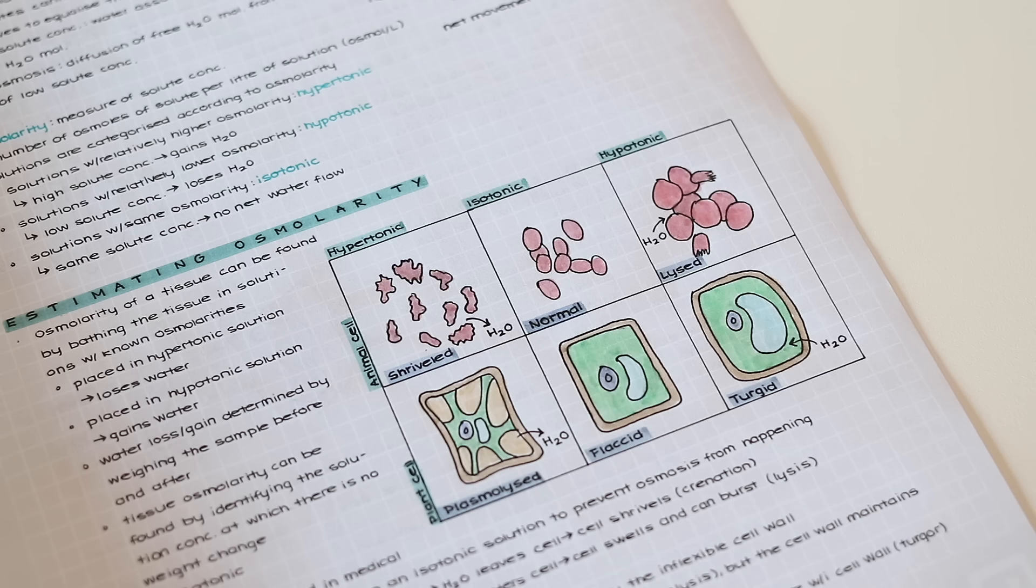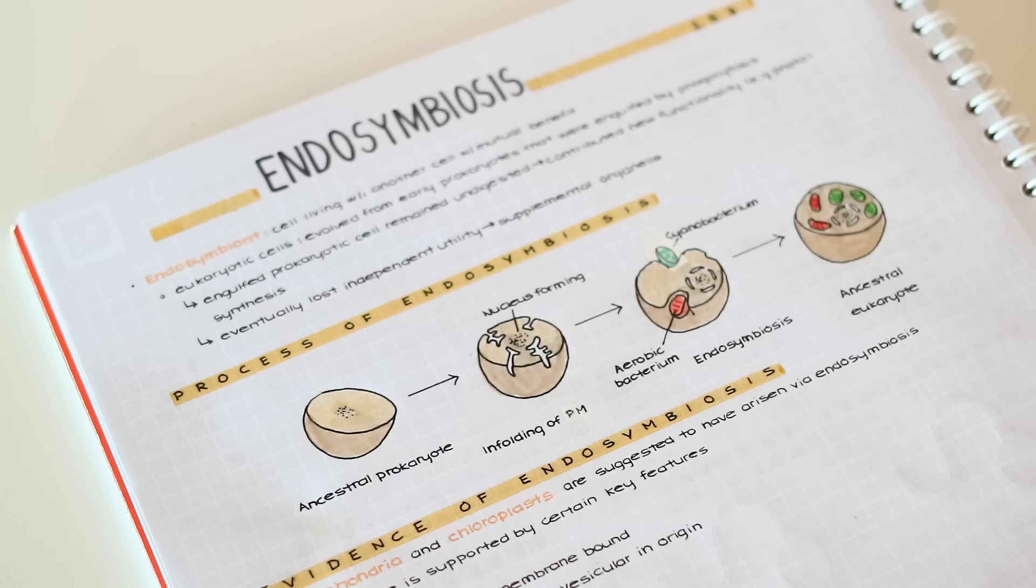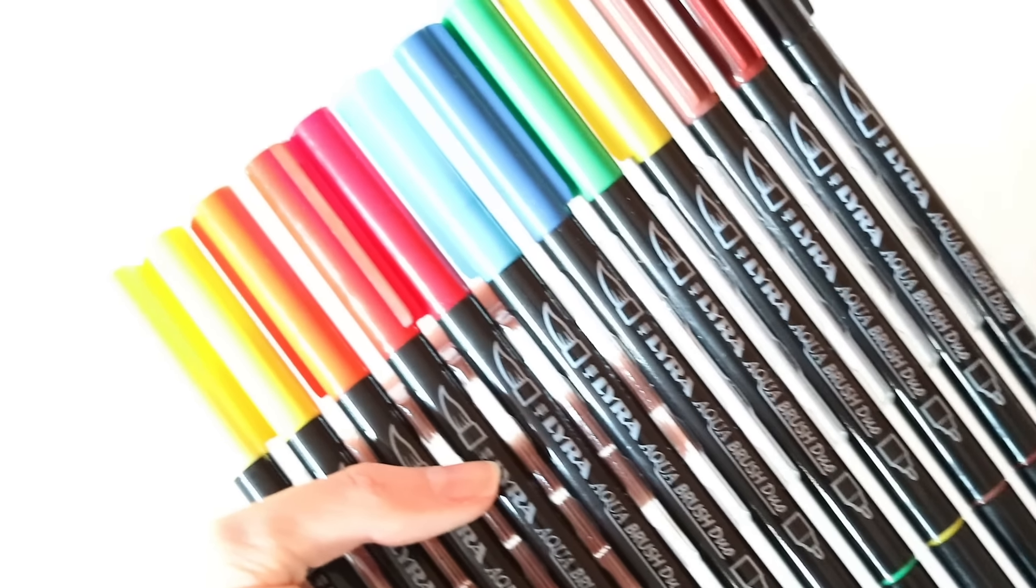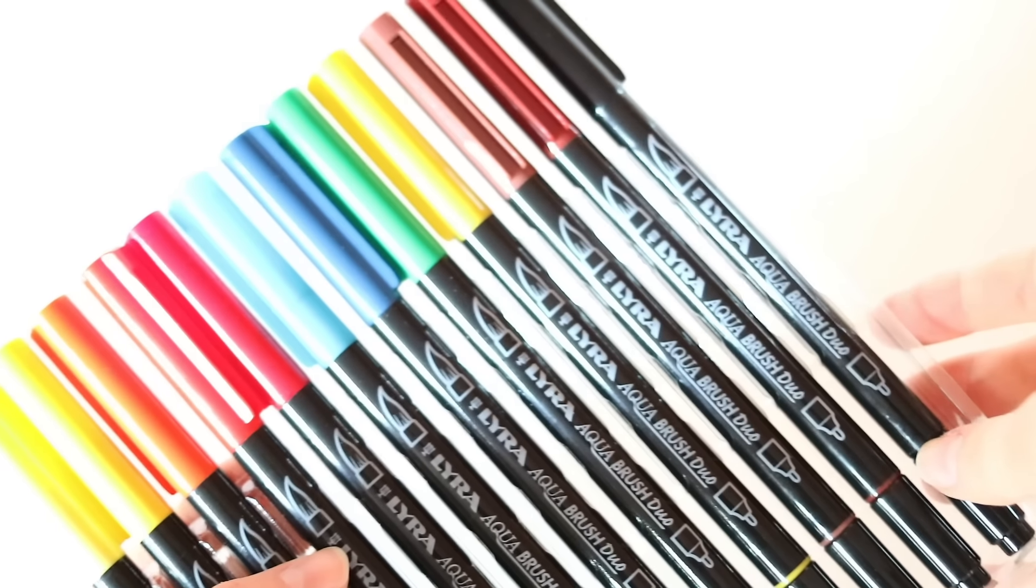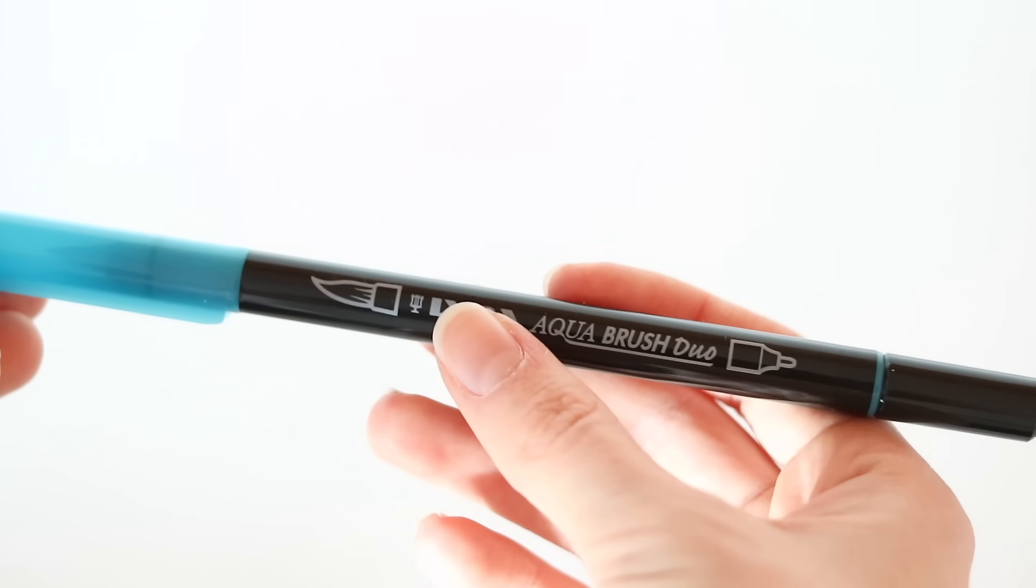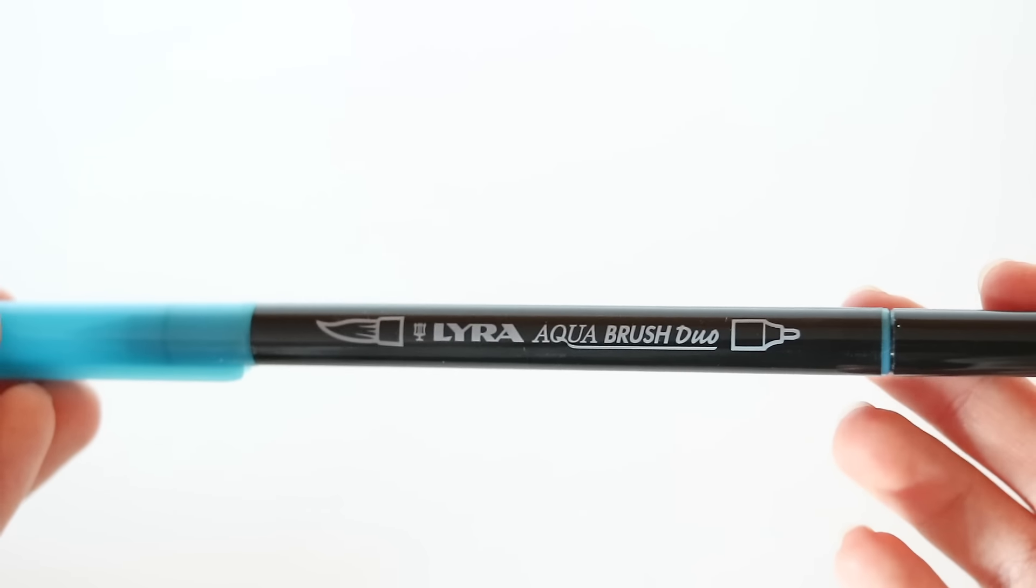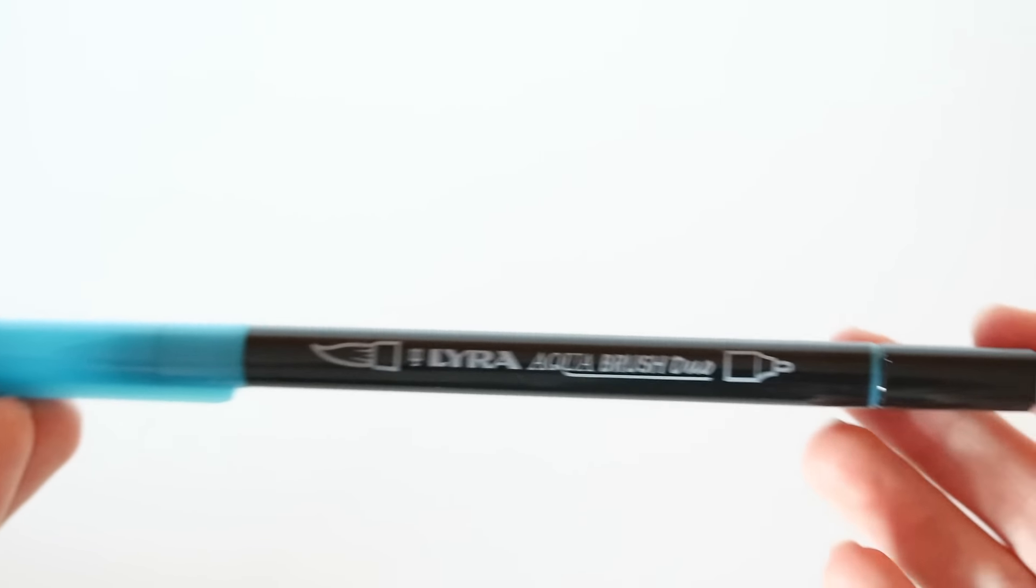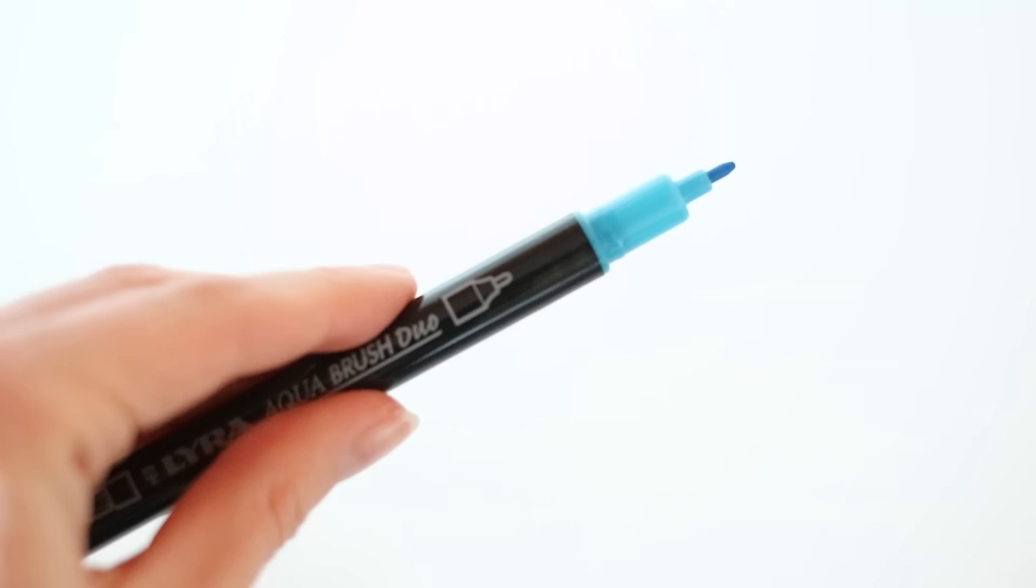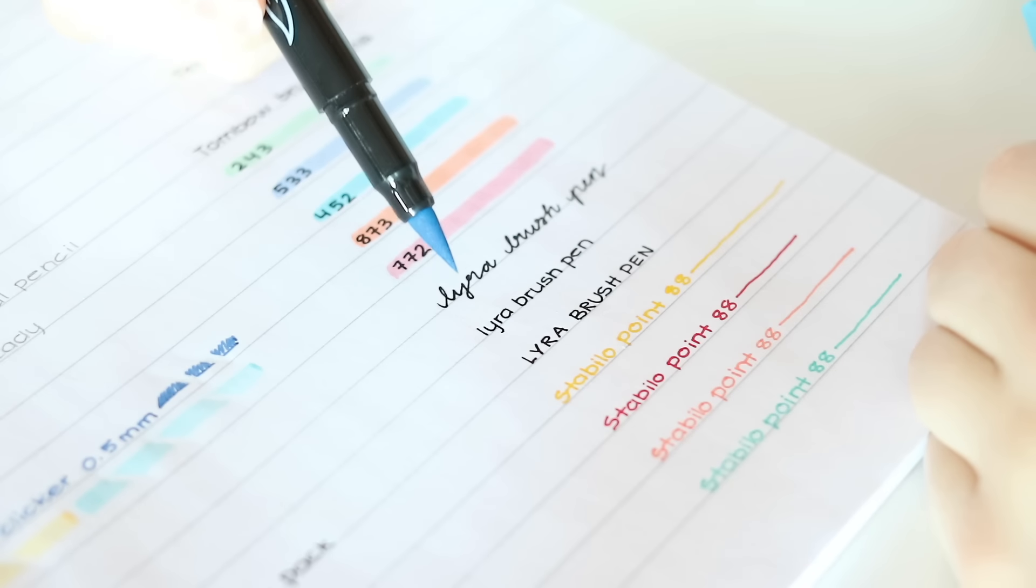The Tombow brush pens can be a bit expensive though so another type of cheaper brush pen that I also like are the Lyra Aqua Brush Duo pens. They don't come in as many colors as the Tombow ones but the quality is just as good.